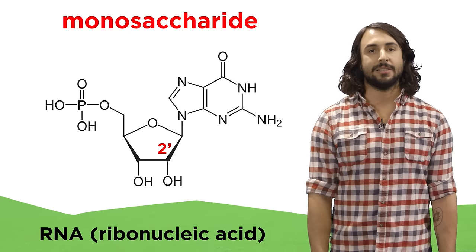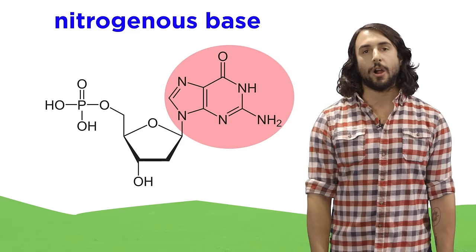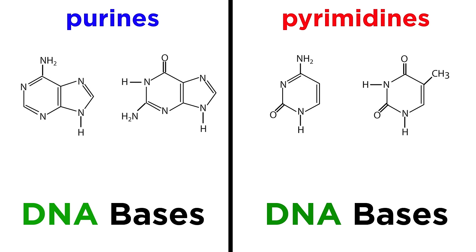Next, extending from the anomeric carbon is a heterocyclic base. It's a heterocycle because there is an element other than carbon inside the rings — in this case nitrogen — and it's a base because of the lone pairs on the nitrogen atoms. These bases can be either purines or pyrimidines, depending on whether there is one ring or two, and in DNA the bases are adenine, guanine, cytosine, and thymine.